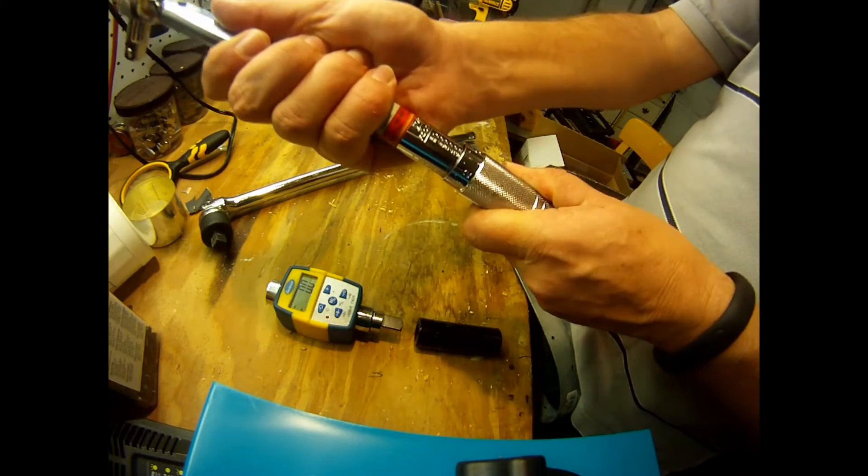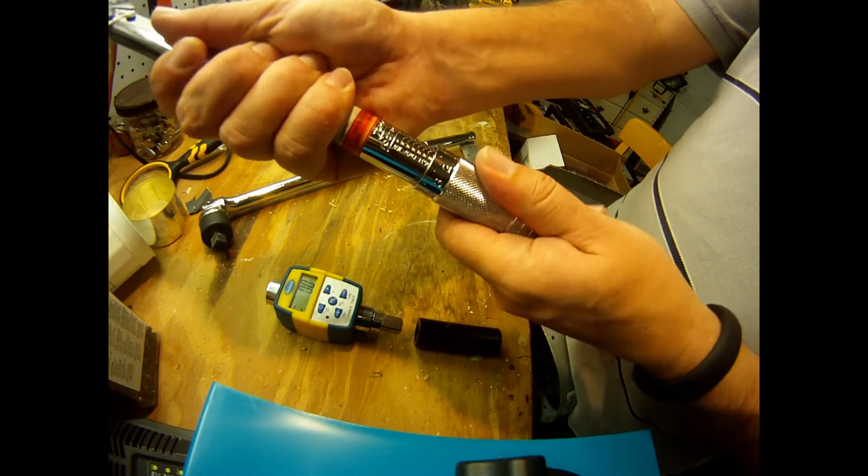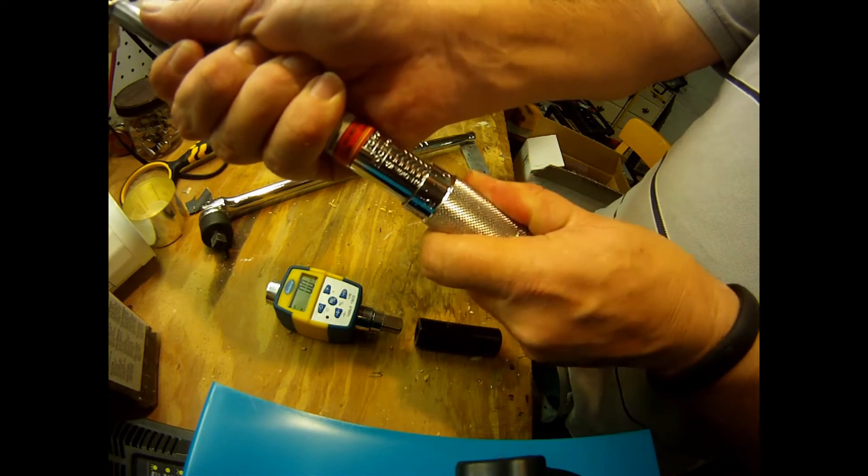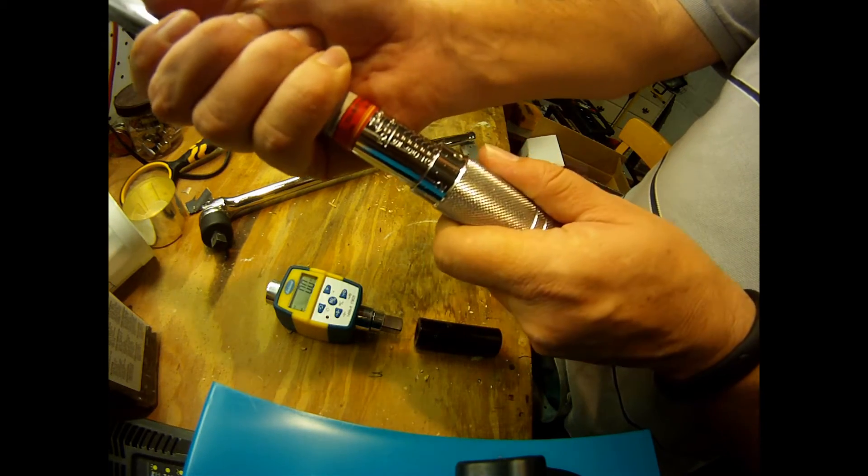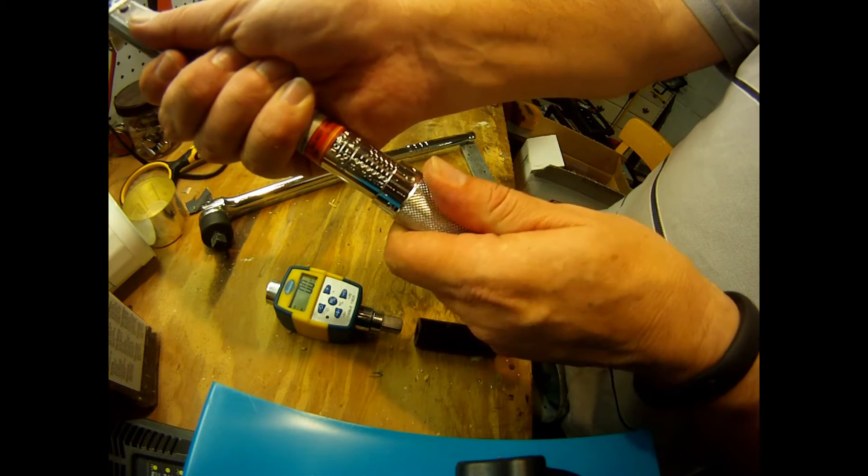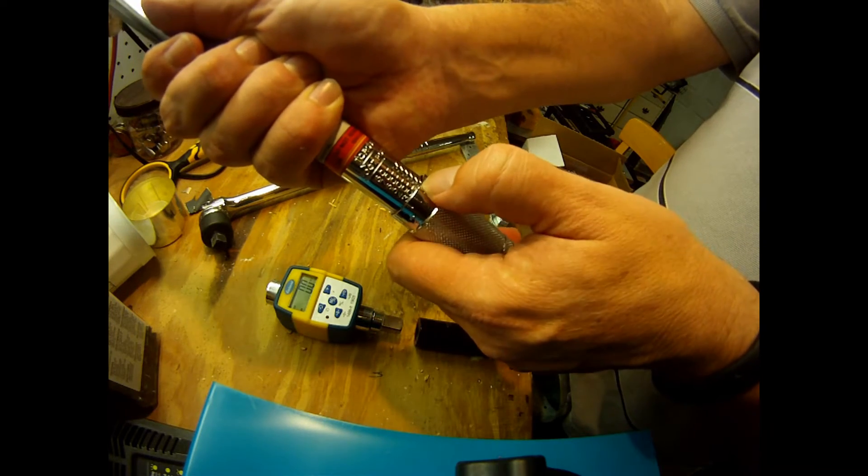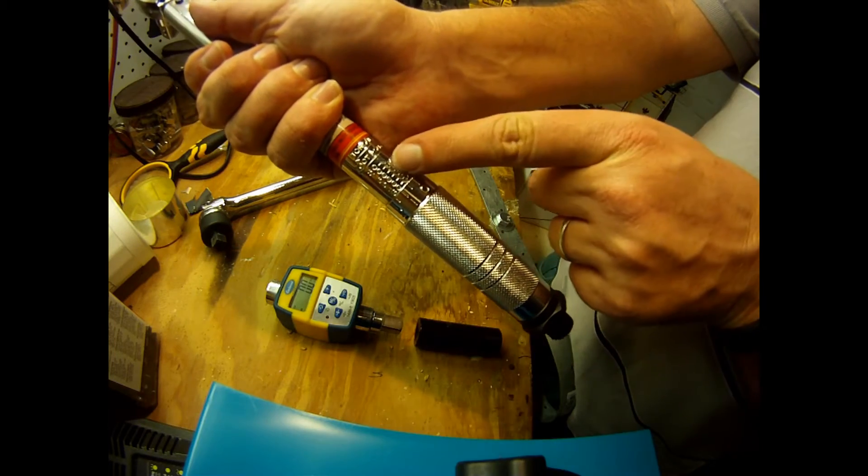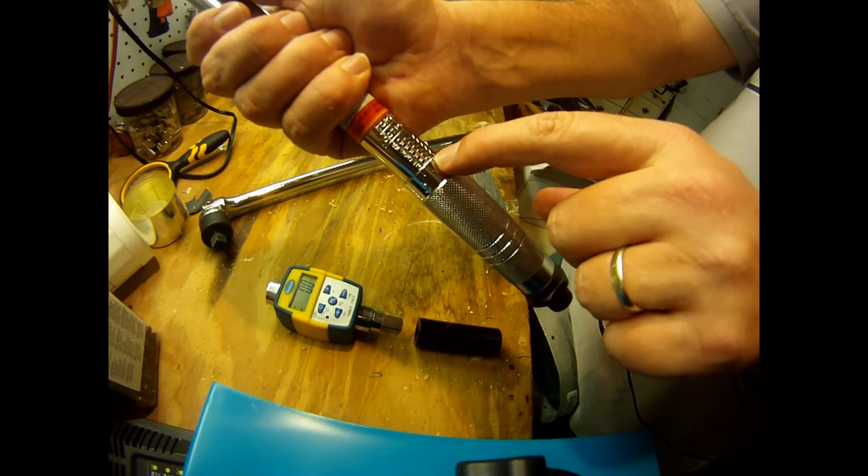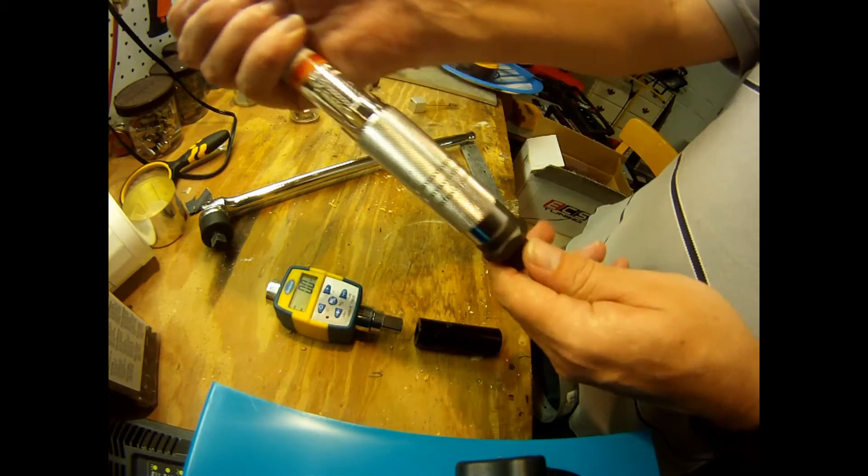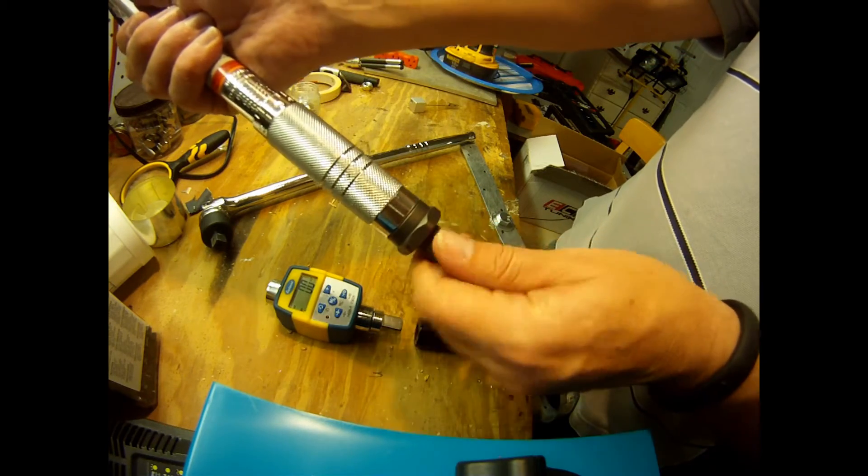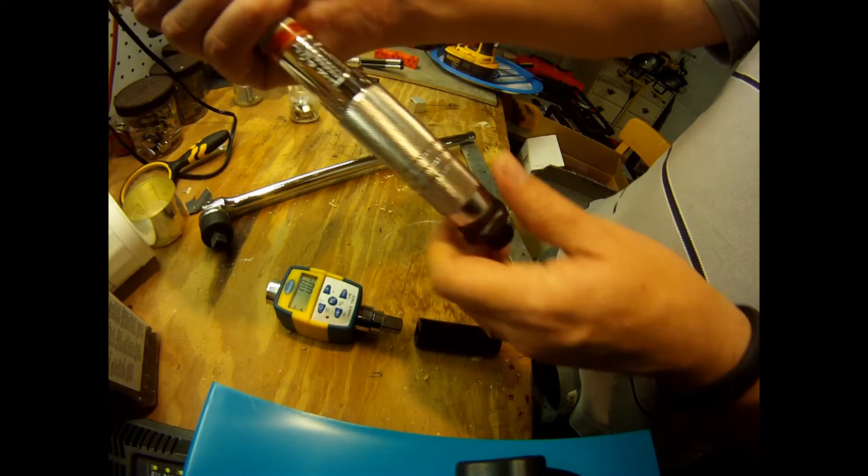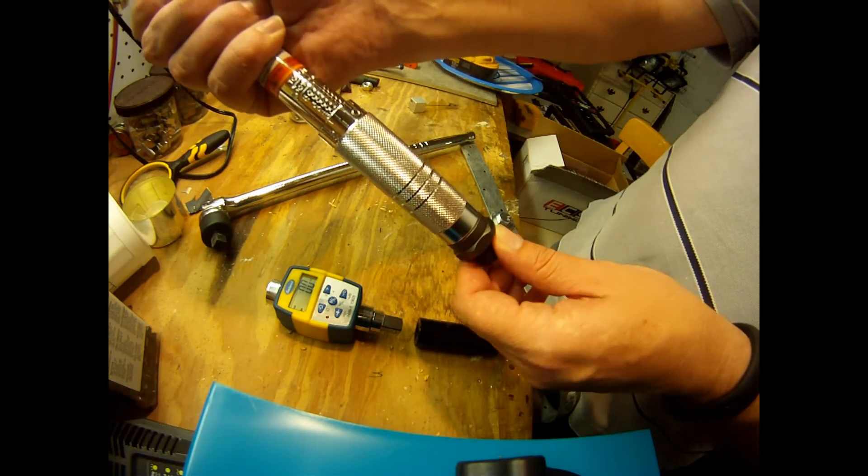When I see 30 and the zero hits the middle of the line here, it's pretty much on the line of 30, I just lock the tool. This tool is now set for 30 pounds per foot.